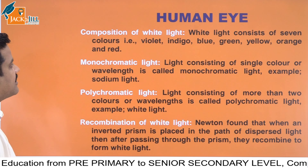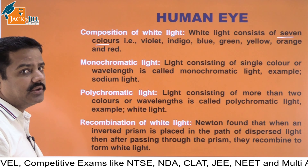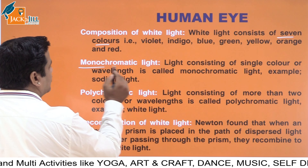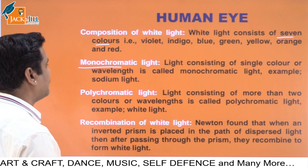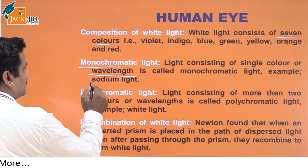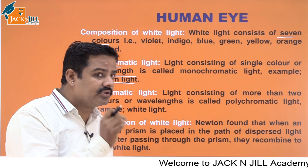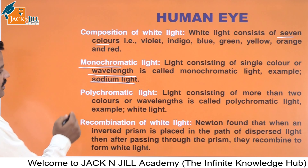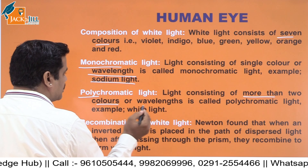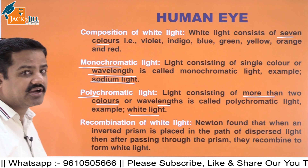White light consists of seven colours: violet, indigo, blue, green, yellow, orange, red. Monochromatic light is light consisting of a single colour or wavelength — for example, sodium light. Polychromatic light consists of more than two colours or wavelengths — for example, white light, because it consists of seven colours.